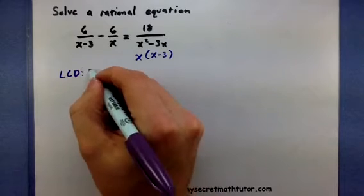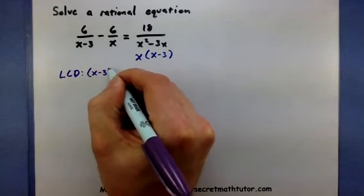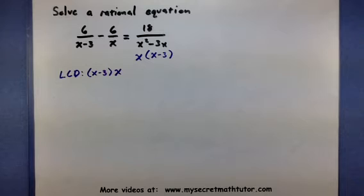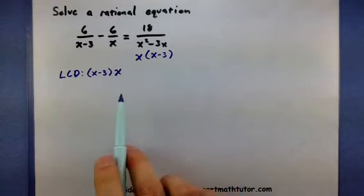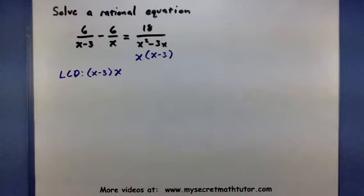So it looks like I have an x minus 3 piece, and I have an x piece. And, of course, this denominator is just a combination of both of those. So my least common denominator is an x minus 3 times an x.